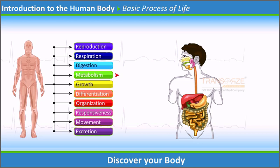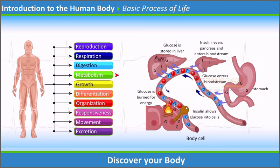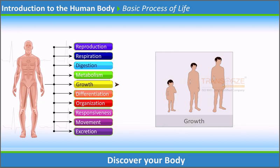Metabolism refers to all the chemical reactions that occur in the body. Catabolism is a phase of metabolism in which complex substances are broken down into simpler substances and energy is released. Growth is the increase in size, either through an increase in the number of cells or through an increase in the size of each individual cell.